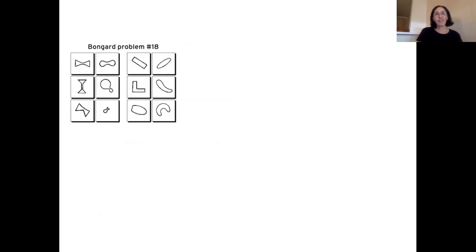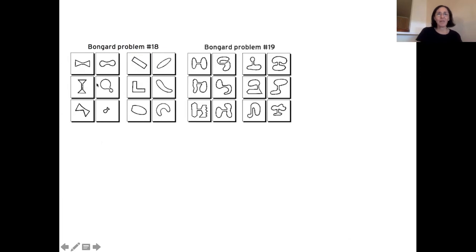Bongard proposed a hundred of these problems and other people have proposed more. Some of them are pretty subtle. Like this one where the idea is that this side has, as in Bongard's words, all the figures have a neck. Here's another kind of abstraction, the abstraction of a neck. This has a little neck. This has a little neck. This doesn't, these don't have necks. It's a kind of a concept that you come up with on the fly to describe these.